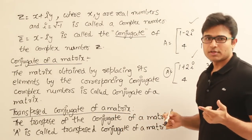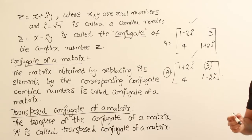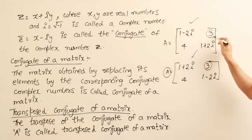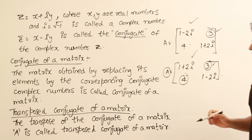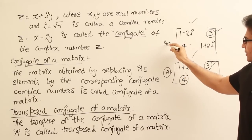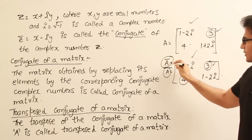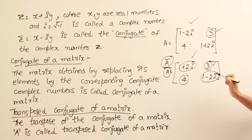One thing you should observe is that whenever a number doesn't have any imaginary part, even if you take the conjugate of the number it is going to be the same number. So since there is no imaginary part, the conjugate of 3 is 3 and the conjugate of 4 is 4. The conjugate of matrix A, generally represented as A-bar, is obtained by taking each number and replacing it with its conjugate.